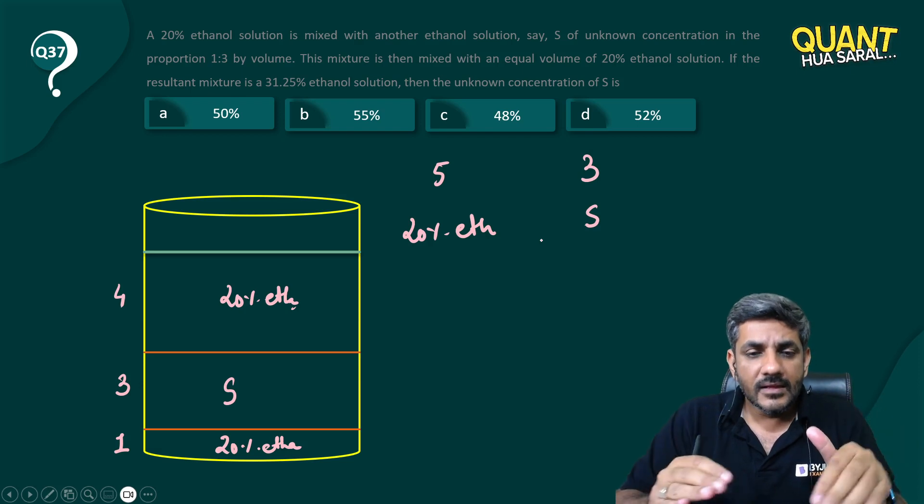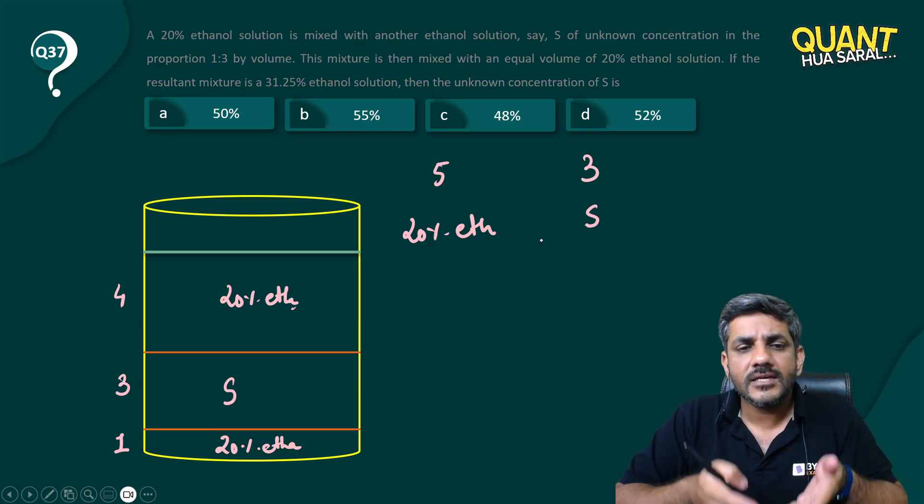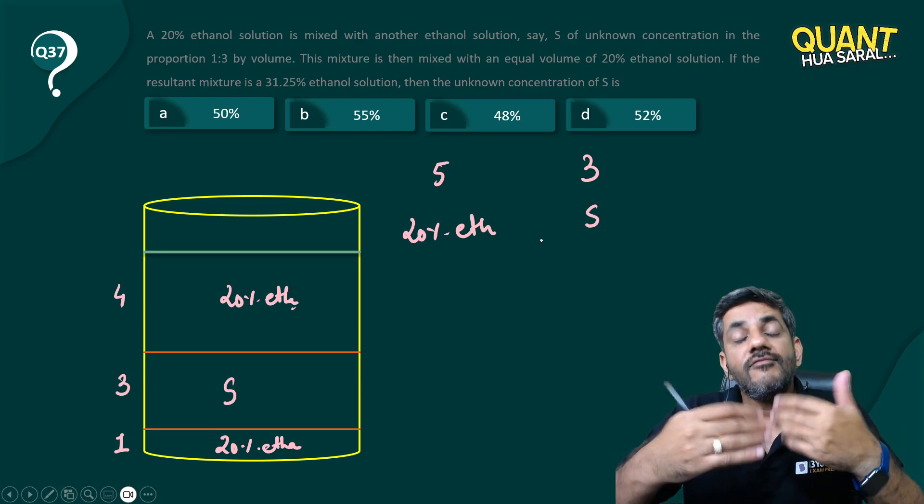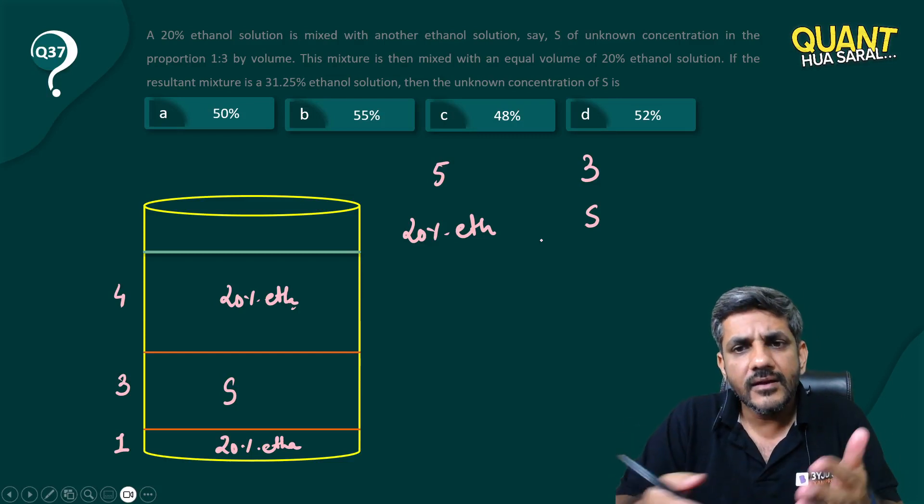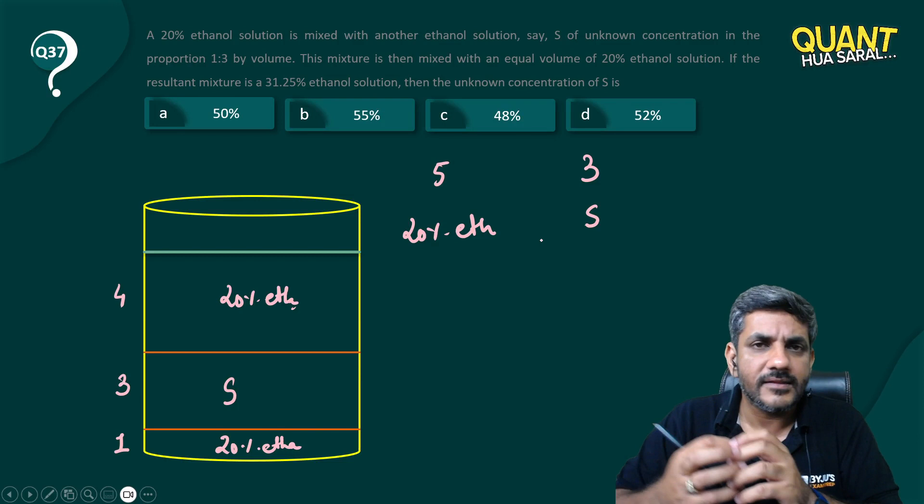Ultimately it is 5:3—five parts of 20% ethanol and three parts of S. This whole mixture gives me 31.25% ethanol solution. Now the total quantity becomes eight liters, out of which 31.25% is ethanol.